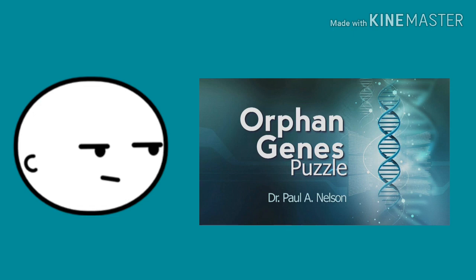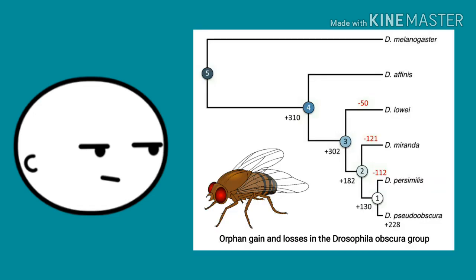However, I do have a problem with that argument in that we do find organisms that have orphan genes and are able to interbreed with other organisms that do not share those orphan genes. For example, Drosophila flies in the Obscura group. There is a paper entitled The Life Cycle of Drosophila Orphan Genes — the link would be in the description. That paper shows that some species within the Drosophila Obscura group have orphan genes that others don't have. However, these species can hybridize; you can cross them. And there's also a link in the description where experiments were done crossing these species. So that's my problem with the argument that orphan genes indicate that organisms are unrelated.